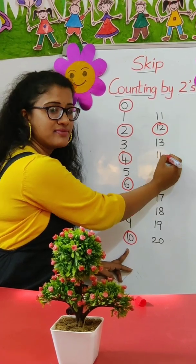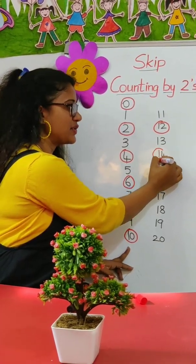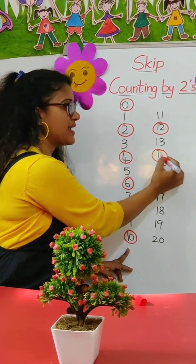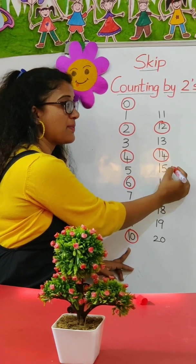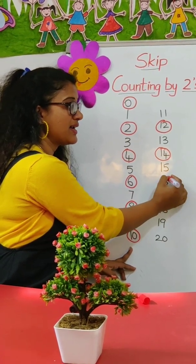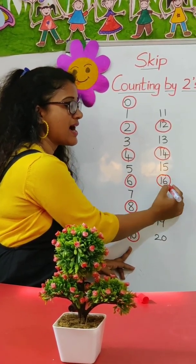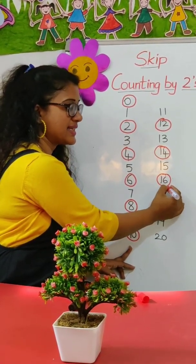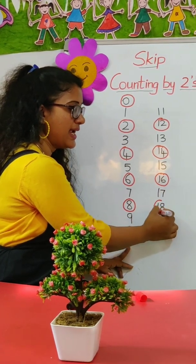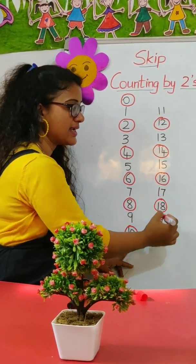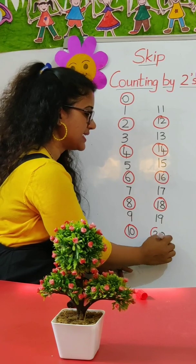After ten, you are going to skip eleven and jump to twelve. After twelve — good — fourteen. After fourteen, I am going to skip one — it is sixteen, eighteen. After sixteen, children: eighteen. After eighteen: twenty.